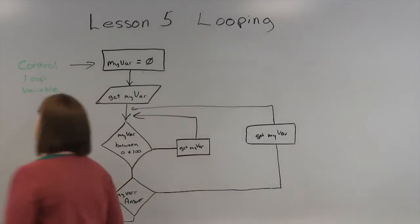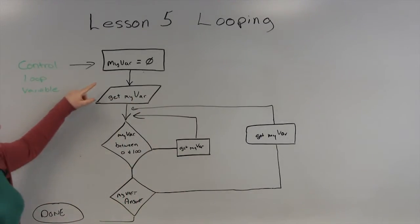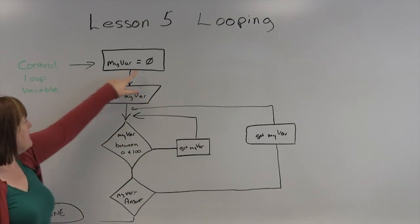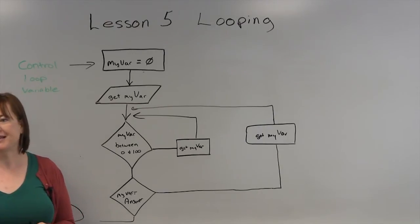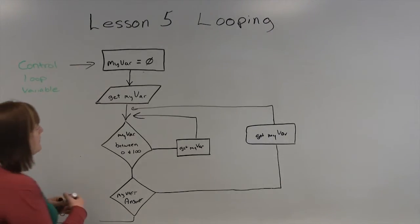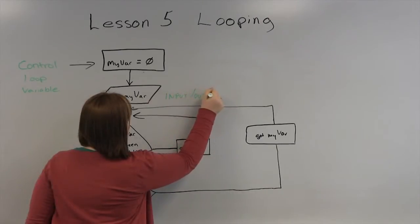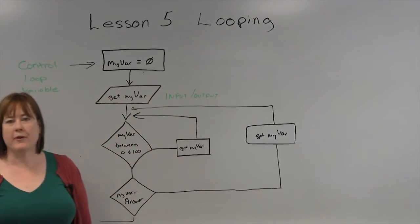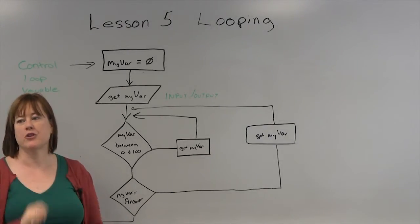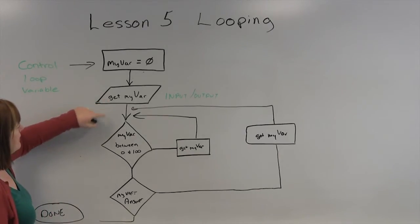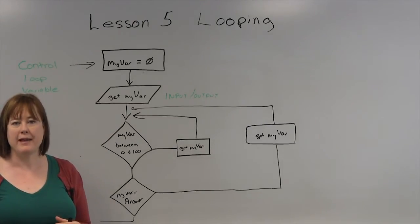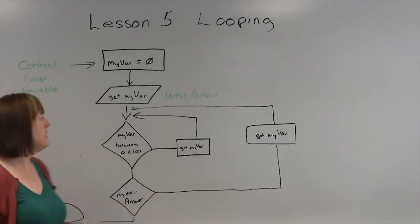You typically have to start with a loop, you start with the control loop variable. In this case, I've called the variable my var, largely because I didn't want to write out my variable. I've initialized it to zero because there might be garbage in that memory spot before we start. When I say get my var, notice this is an input output symbol. This is the correct way it should be drawn. We're going to prompt the user to enter a variable and store it in my var.